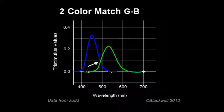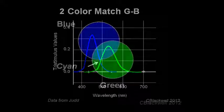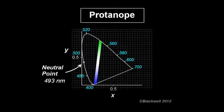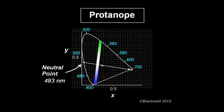Without a red cone, somewhere blue and green are present in equal amounts, and that would be perceived as achromatic. That occurs at 493 nanometers. For the trichromat, the blue and green make cyan. For the protonope, that same area would look achromatic or white. Back to the chromaticity diagram — here is the neutral point, and here is the equal energy point, that is the point where red, green, and blue combine in equal amounts to make white. If you make a line from the neutral point through the equal energy white, all the colors that fall along this line are perceived by the protonope as achromatic. This is another confusion line.